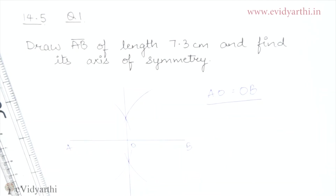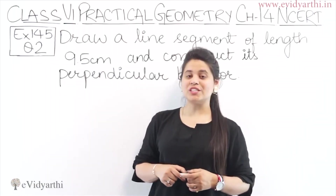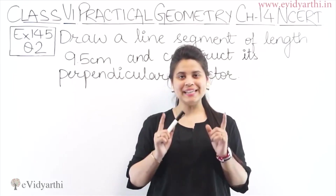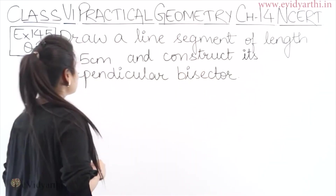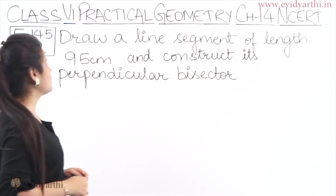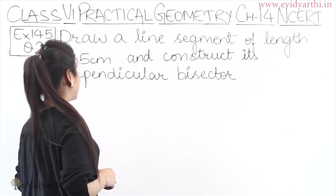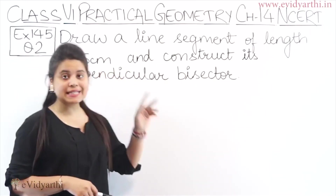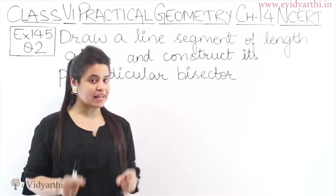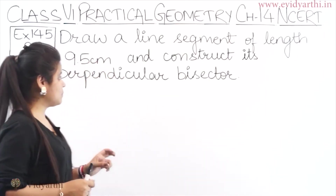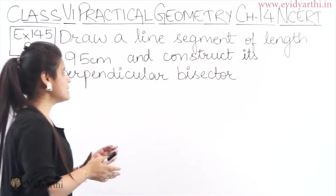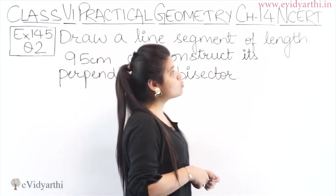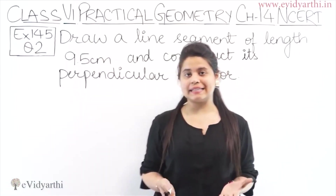This was question number 1 of Exercise 14.5. Now we are starting with question number 2 of Exercise 14.5. In this question, we have to draw a line segment of length 9.5 cm, and construct its perpendicular bisector. We will construct that perpendicular bisector.